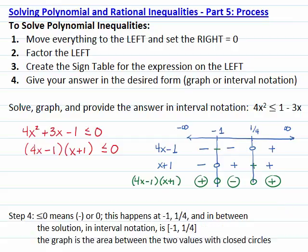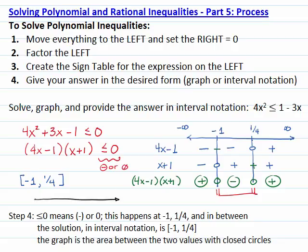After the table is completed, we are ready to answer our question — step number 4. Less than or equal to zero means negative or zero. Negative or zero occurs at x equals negative 1, at x equals one quarter, and in between. So our interval notation is closed bracket negative 1, one quarter, closed bracket, because it includes equality. And our graph is the number line with the area between negative 1 and one quarter shaded, with closed circles at negative 1 and one quarter to show the equality.